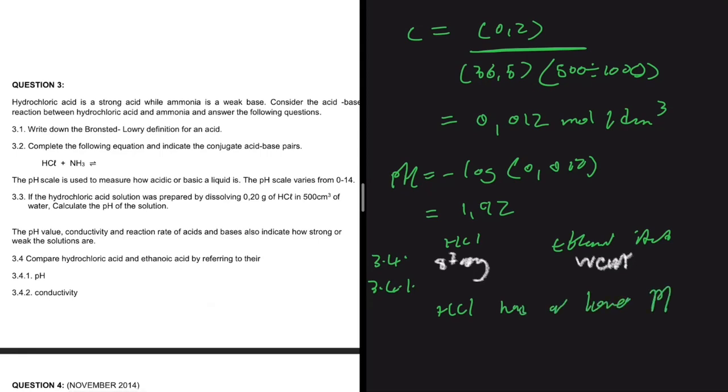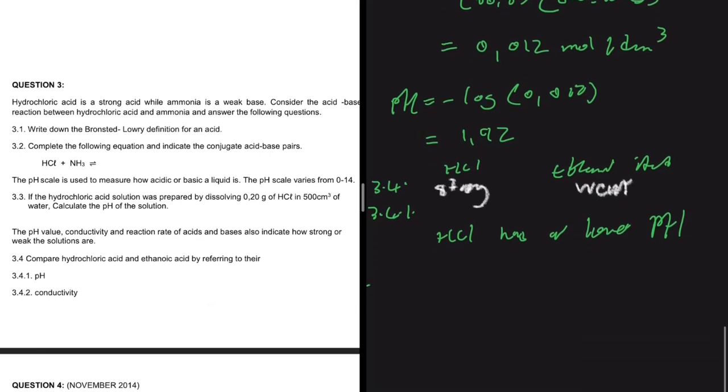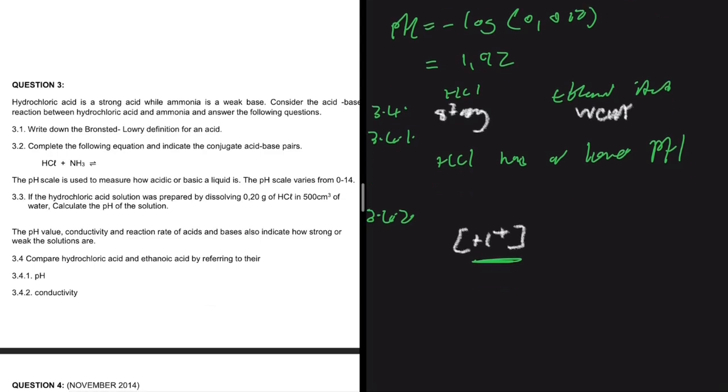And now 3.4.2, conductivity. So what is the relationship between the strength of an acid and its conductivity? So previously we have agreed that the more H⁺ an acid produces, the stronger it is. But then let's look at H⁺. This is a hydrogen ion, and these ions can conduct charge. So the higher the concentration of H⁺, then the higher the conductivity.